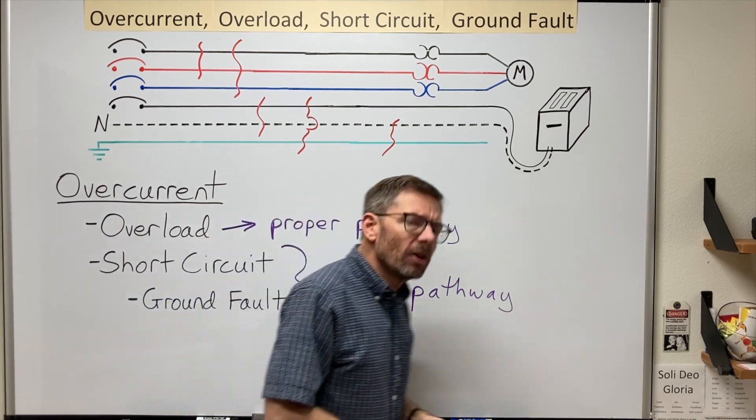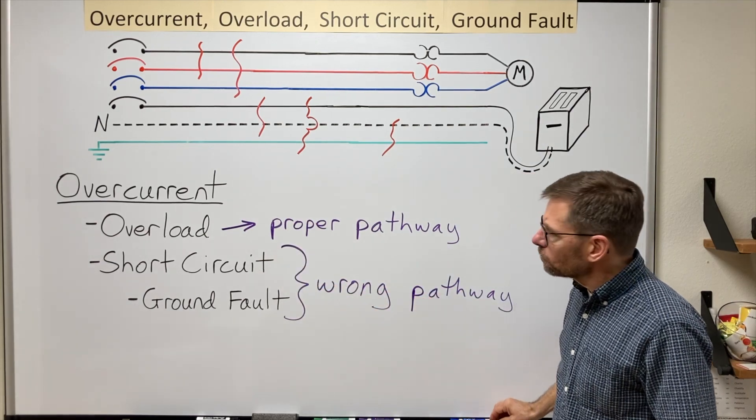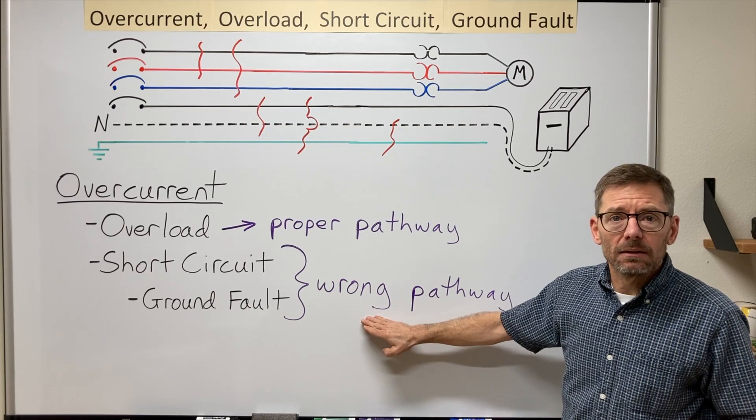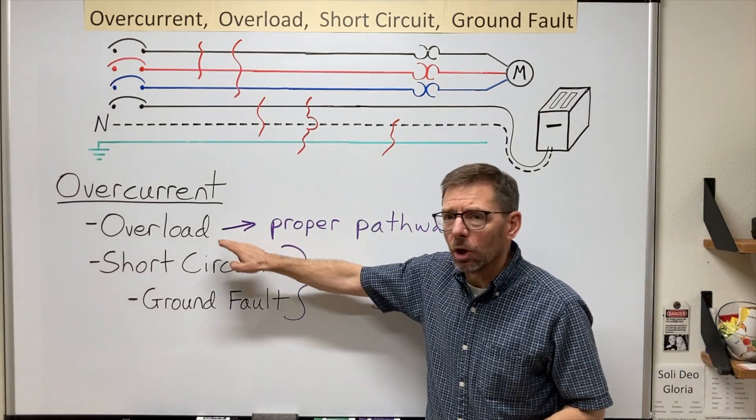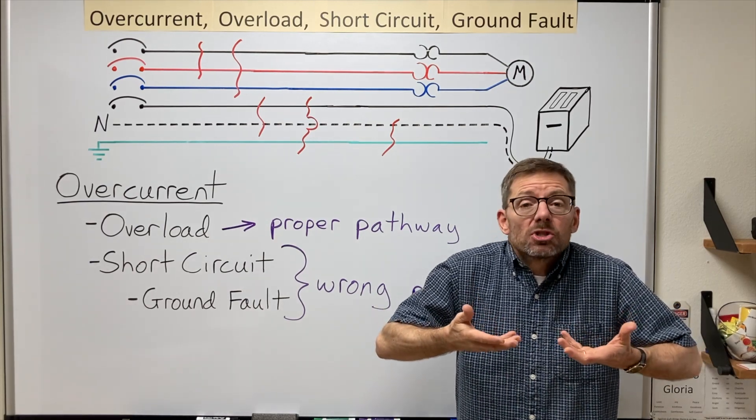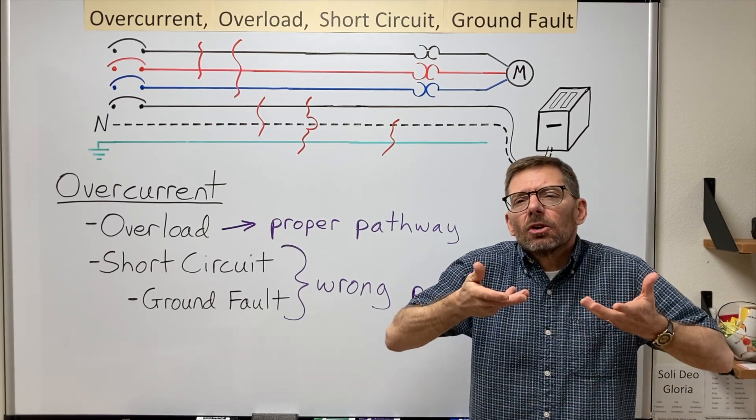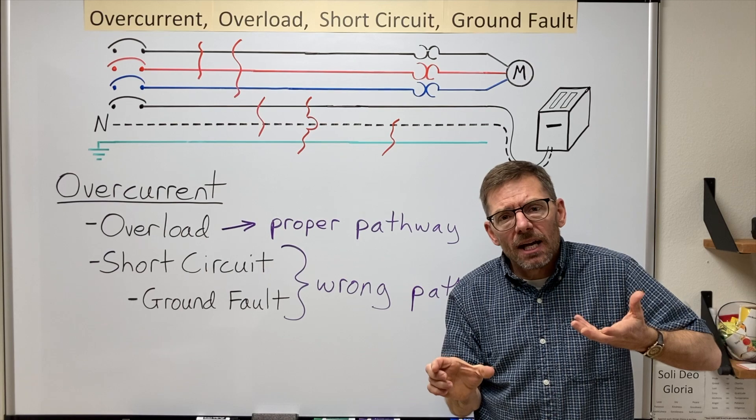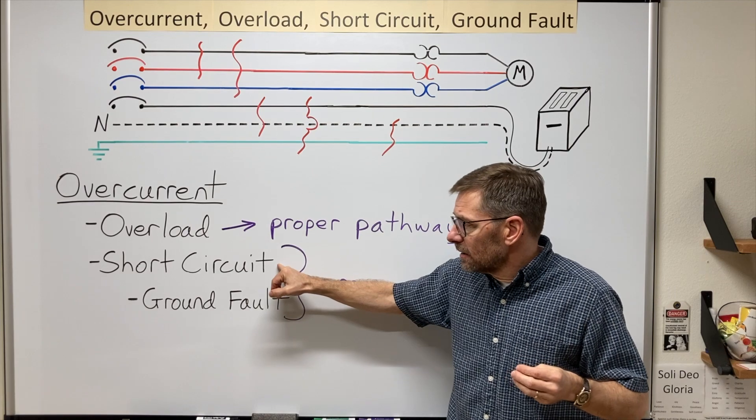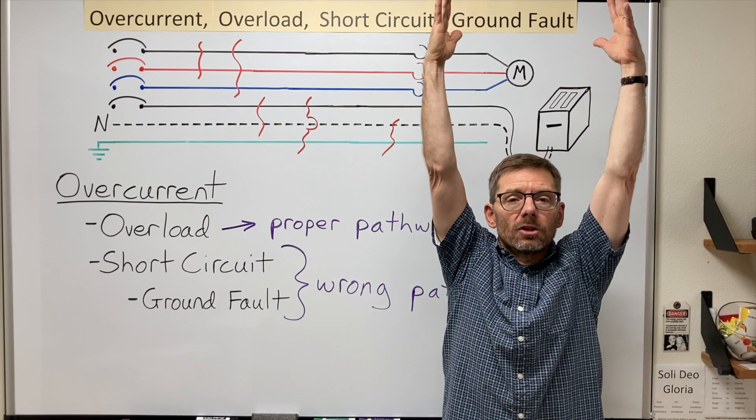So what are the main differences then between my overloads and these short circuits? I mentioned proper pathway, wrong pathway. But also, let's think that an overload often exceeds the rated current as much as four or six times, maybe more. But it exceeds the current for a period of time, or the device will open. But a short circuit often greatly exceeds the rated current.